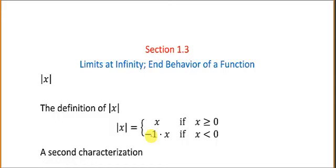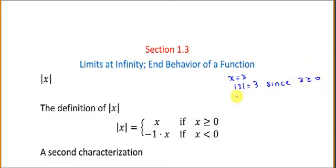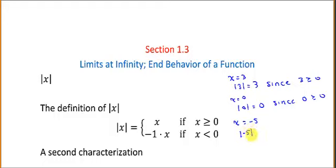Let's look at some examples. If x equals 3, the absolute value of 3 is equal to 3 itself, since 3 is greater than or equal to 0. If x equals 0, the absolute value of 0 is equal to 0, since 0 is greater than or equal to 0. And if x is equal to negative 5, the absolute value of negative 5 is negative 1 times negative 5, which equals 5, since x is less than 0.